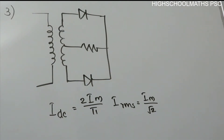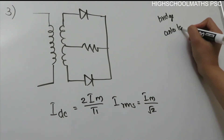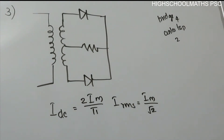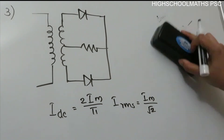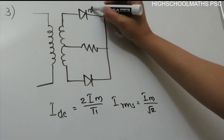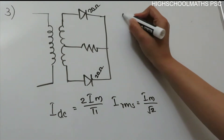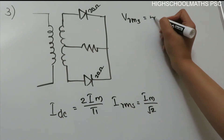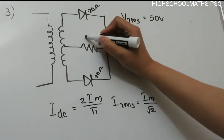A full-wave rectifier uses two diodes. There are two types: bridge rectifier (uses 4 diodes) and center-tap (uses 2 diodes). Since we use two diodes here, this is a center-tap configuration. The internal resistance of each diode is 20 ohm. The RMS voltage is 50 volt and load resistance is 980 ohm.